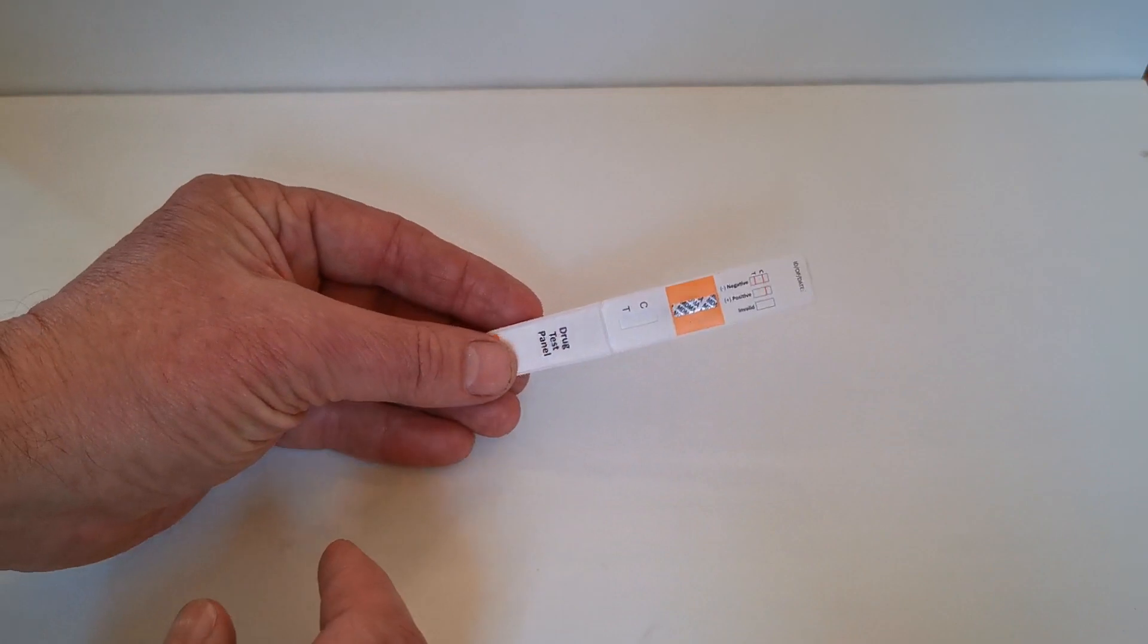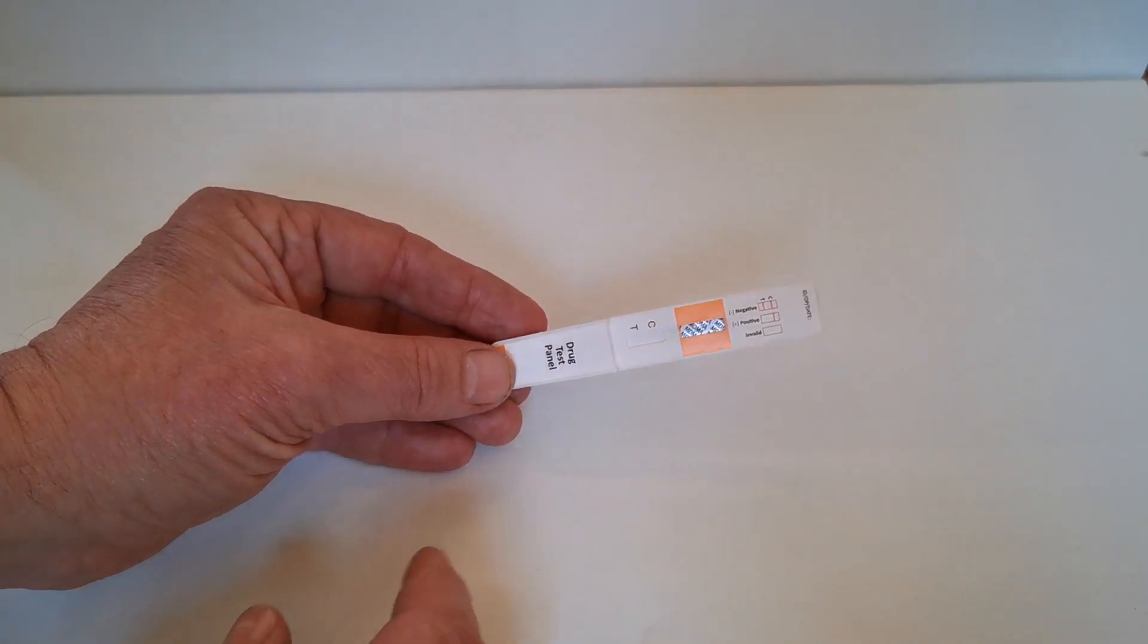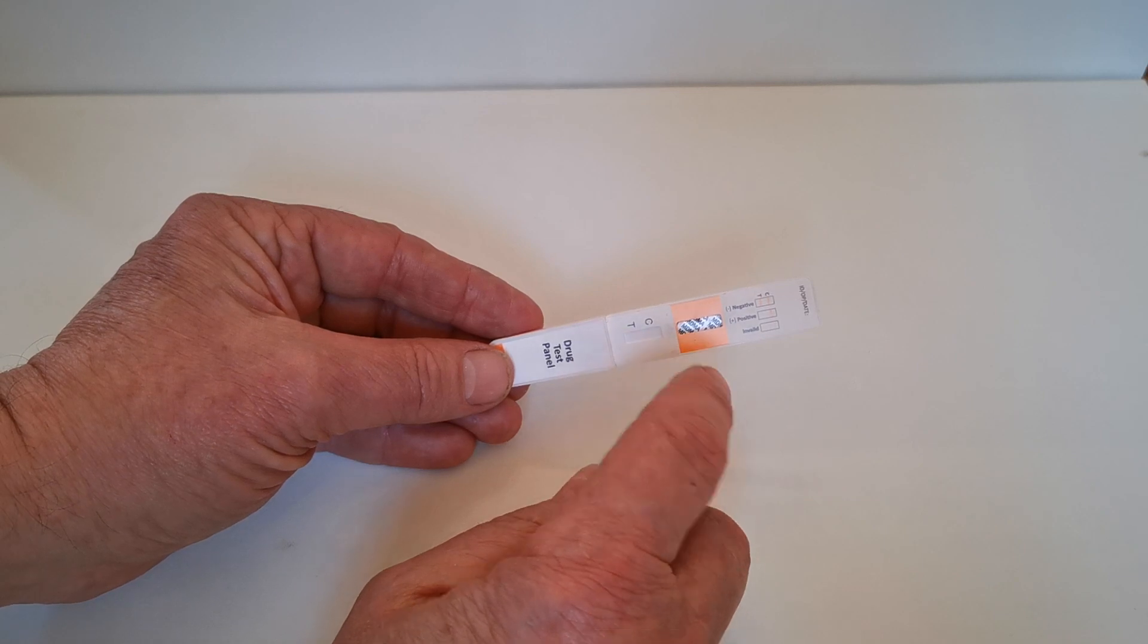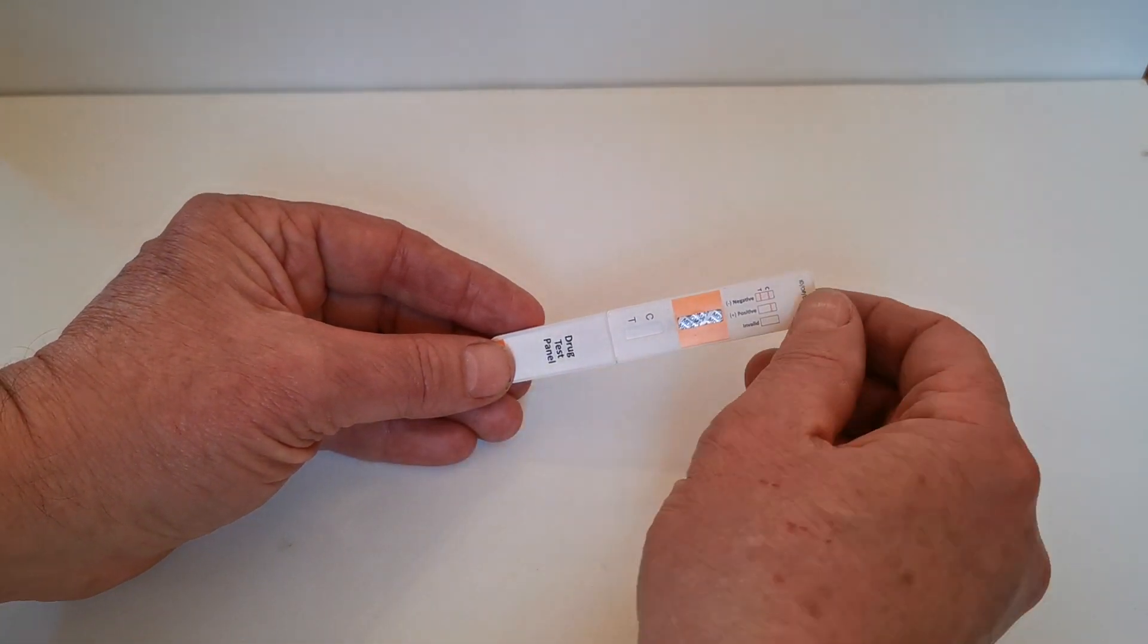Inside the foil you'll be presented with one of these test cassettes with a prong. It has the MDMA coding in the window here showing that this screen is for ecstasy MDMA.